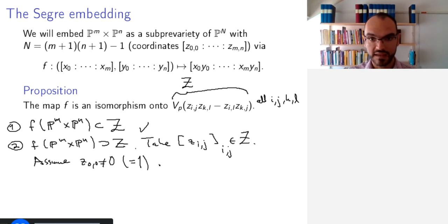And in that case, by the defining equations of Z, we get that Z_IJ times Z_00, which is one, is equal to Z_I0 times Z_0J.